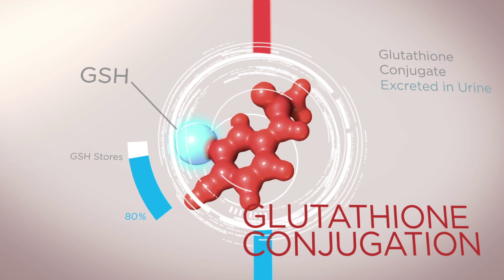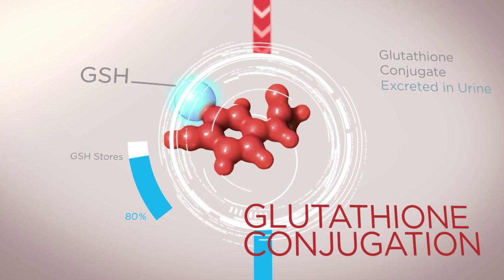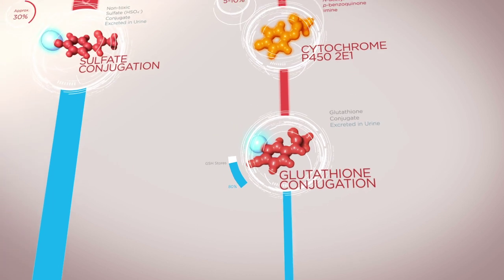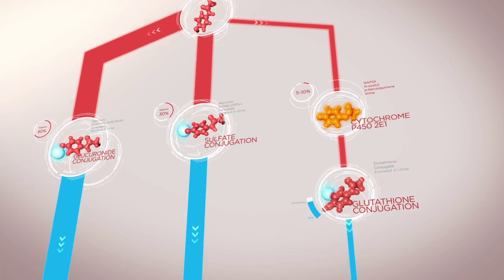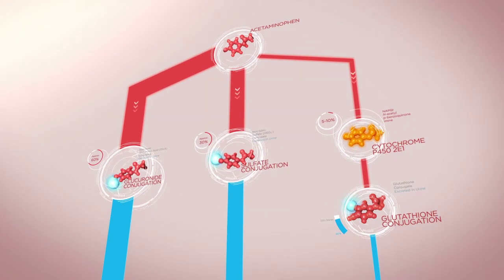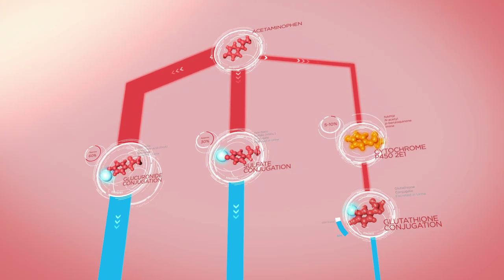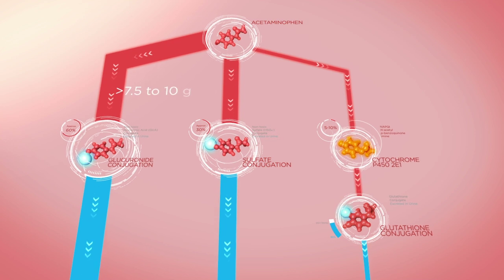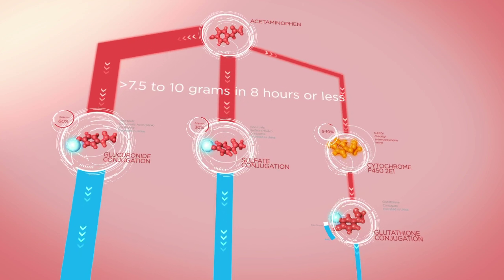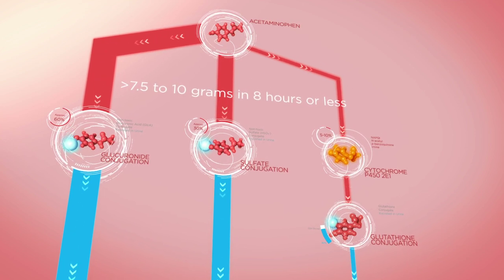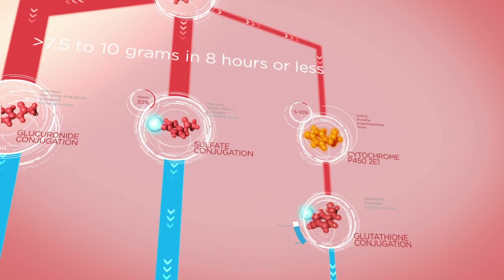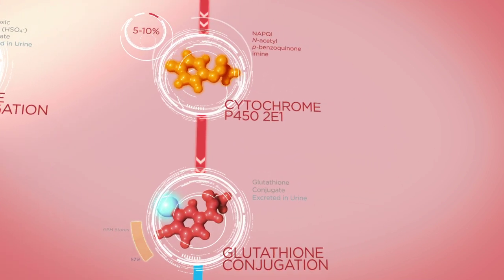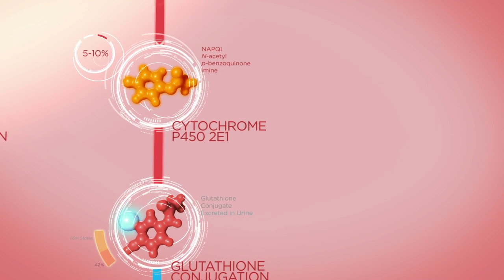Sufficient glutathione is available to conjugate the amount of NAPQI produced when acetaminophen is taken at recommended doses. However, in the uncommon setting of acute acetaminophen overdose — for example, ingestion of 7.5 to 10 grams in 8 hours or less — the amount of NAPQI produced may increase markedly and the amount of glutathione available may become insufficient to conjugate the NAPQI.